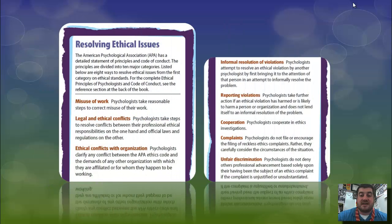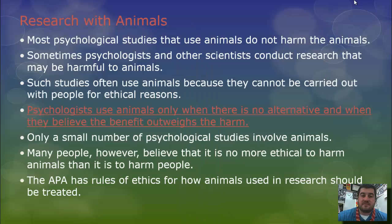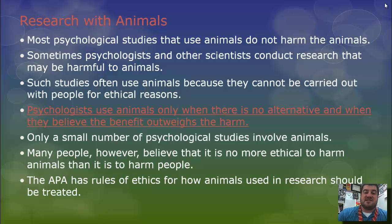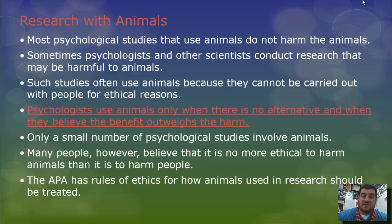Here are some other ethical issues that the APA takes into consideration on how to resolve. Finally, research with animals: most psychological studies do not harm animals. Sometimes researchers need to carry out a study that could be harmful to animals. Such studies use animals because they cannot be carried out with people for ethical reasons. Some people argue that hurting an animal is no more ethical than hurting a person, but the APA still has rules of ethics for how animals used in research should be treated.